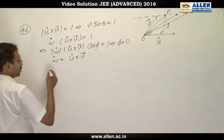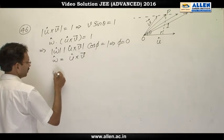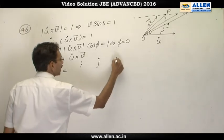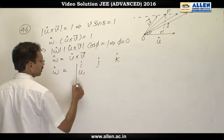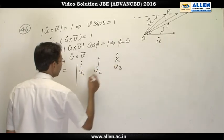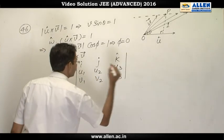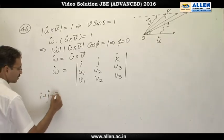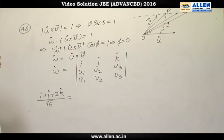Now I will calculate the cross product u vector cross V vector. So omega cap is equal to u cap cross vector V. This is equal to i cap j cap k cap, here it is u1, u2, u3, then v1, v2 and v3. omega cap is i cap plus j cap plus 2k cap upon root 6, this is equal to.